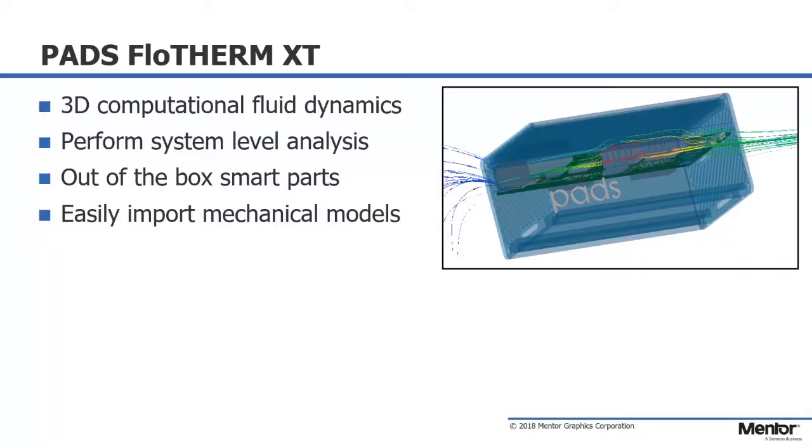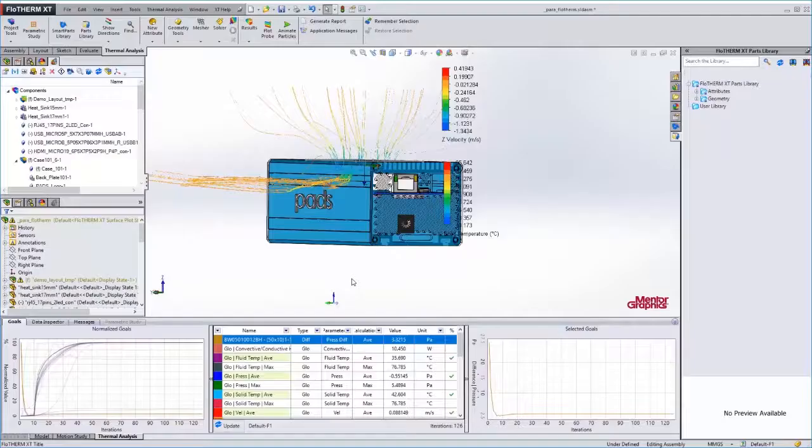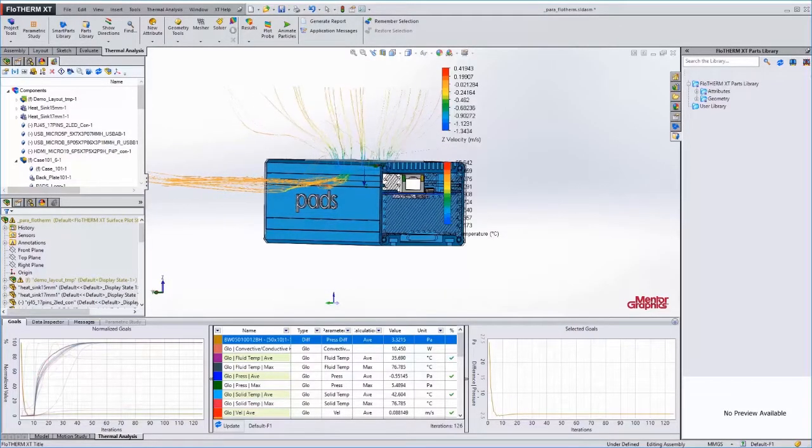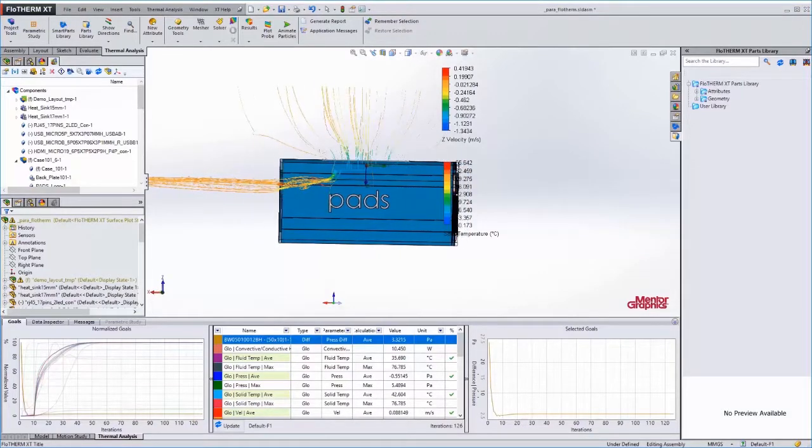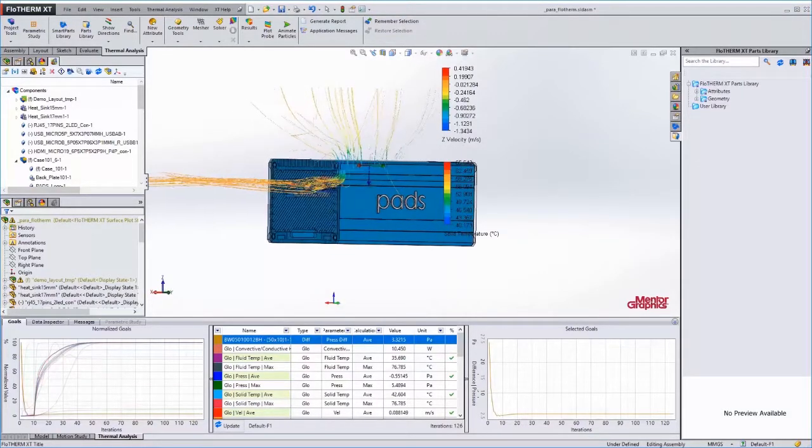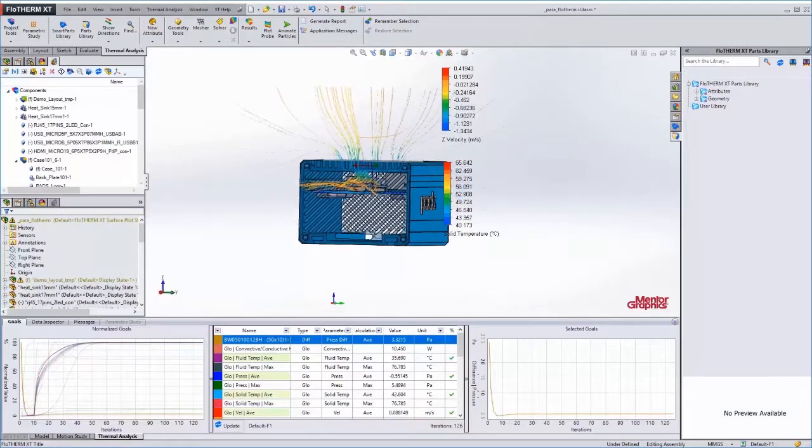And lastly, FloTHERM XT. Use FloTHERM XT to guide PCB placement early in the design process and take into consideration system-level thermal modeling. Users can start with simple models and leverage smart parts to speed up the time to model and simulate. Explore the design space with cases, fans, and heat sinks to optimize the PCB outline, mounting, placement, and full system design.